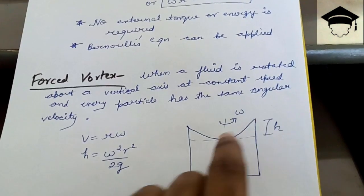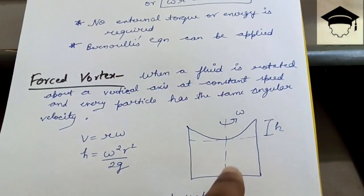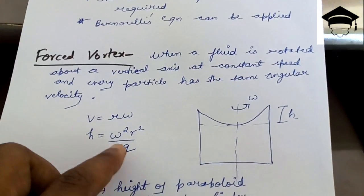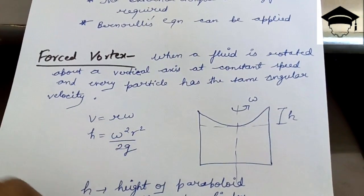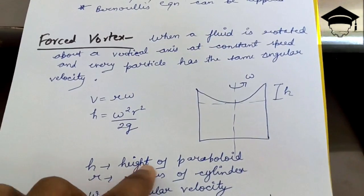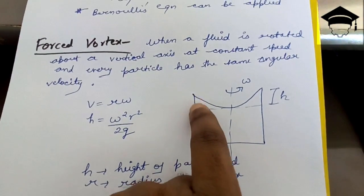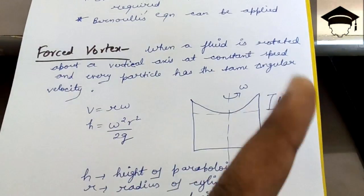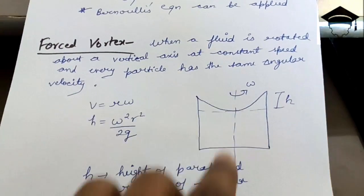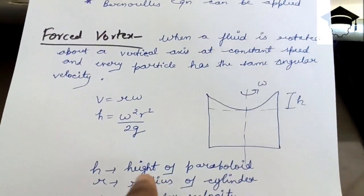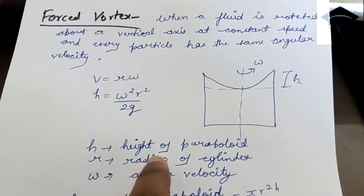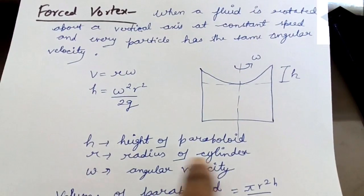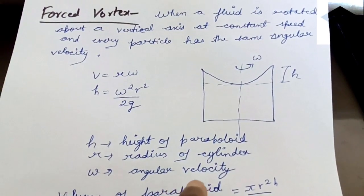This is the paraboloid shape in 2D; if you rotate it in 3D you get a paraboloid. Here r is the radius of the cylinder, and ω is the angular velocity at which the fluid is rotated. The volume of this paraboloid is given by πr²h/2 — that is, it is half the volume of the circumscribing cylinder.